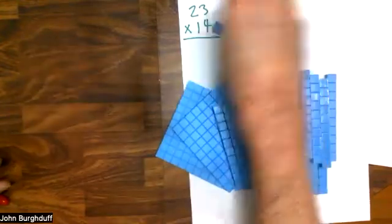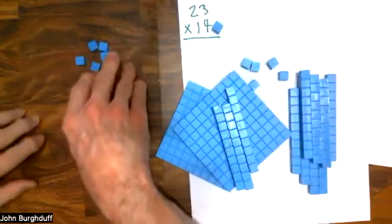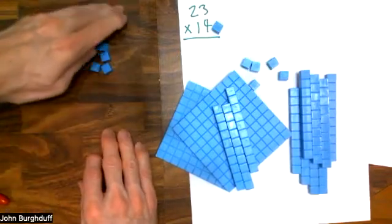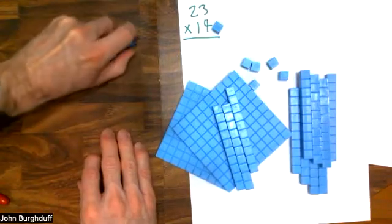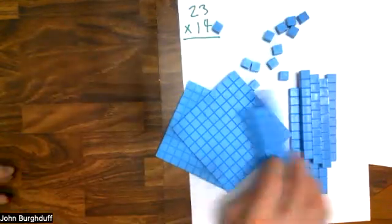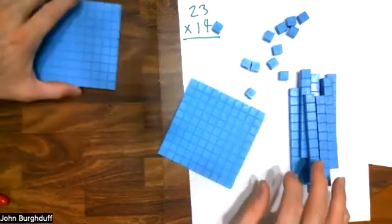Now, I could do that by just doing lots and lots of these units and very carefully making sure there's 23 rows and 14 columns. But I would be far better off if I use some of the bigger blocks that are available in base 10 blocks, like my flats and my longs.